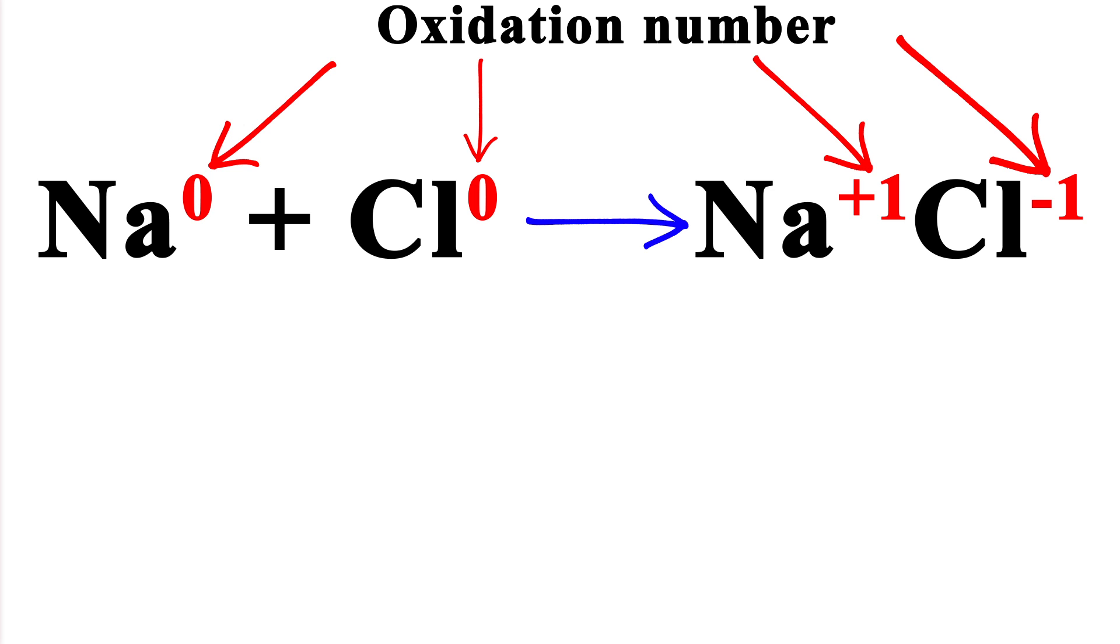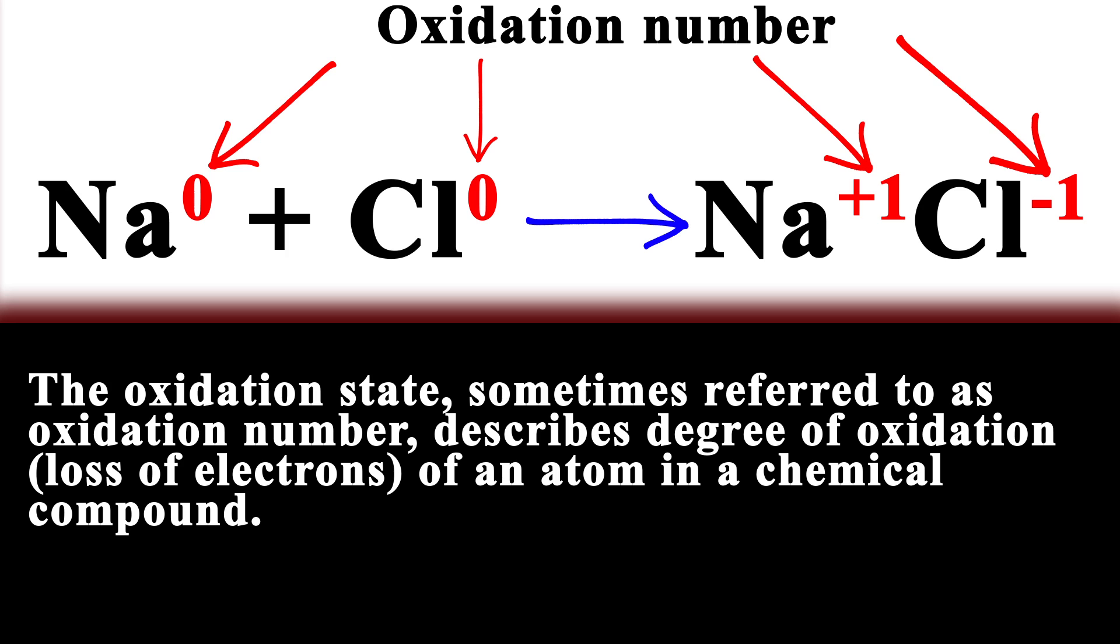Now you can see what oxidation numbers are. The definition is that an oxidation number describes the degree of oxidation (loss of electrons) of an atom in a chemical compound.